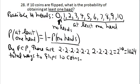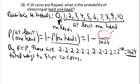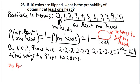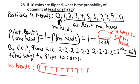The probability of getting no heads is the number of ways to get no heads over 1,024. The only way to get no heads is to go down the branch of all tails — tail, tail, tail, tail, tail, tail, tail, tail, tail, tail — that's the only one. There is only one way to get no heads, so the numerator is 1.